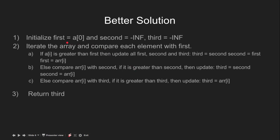Let's look at a better solution. In this approach, we will be iterating the array just once. We create three variables: first, second, and third. We iterate the array and compare each element with 'first'. If the ith element of the array is greater than 'first', then we update all three variables — third becomes second, second becomes first, and first becomes the ith element of the array.